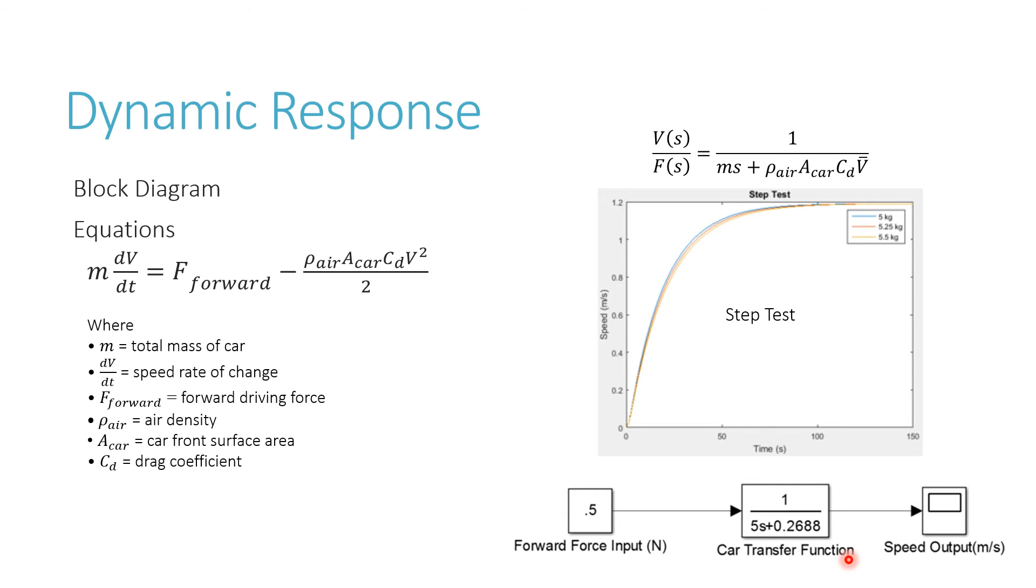We did a couple of step tests. You can see in this graph with different masses of the car. As you change the mass from 5 to 5.5 kilograms, the response is slower, so it takes longer to reach steady state. You can see in this equation, the mass is the time constant, so as you increase the mass, you're increasing the time that it takes.